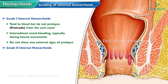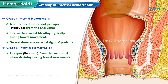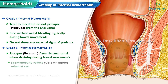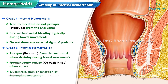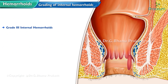Grade 2 internal hemorrhoids prolapse or protrude from the anal canal when straining during bowel movements but spontaneously reduce — they go back inside when at rest. They may cause discomfort, pain, or a sensation of incomplete evacuation.